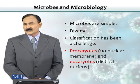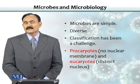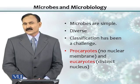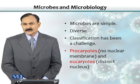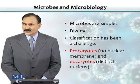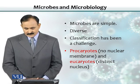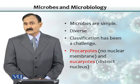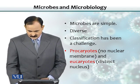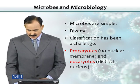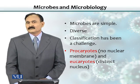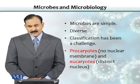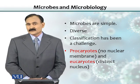Microbes are very simple in their structure. If you compare a microbe with an animal or a human, animals and humans are multicellular, and those cells are arranged into tissues, and then the tissues are arranged into organs. But microbes are simple and mostly unicellular; they are not organized like typical multicellular organisms like humans or animals. They are very simple, but there is a lot of diversity among them, and because of that diversity, classifying them is really a challenge for the microbiologist.